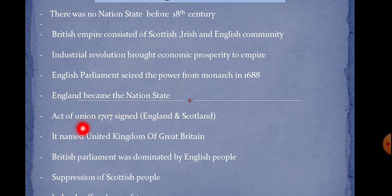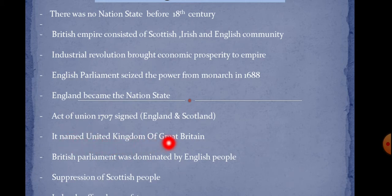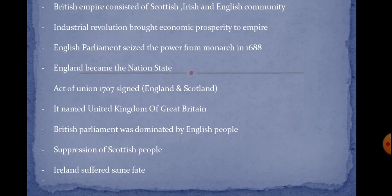After England became a nation state, there was an Act of Union in 1707, signed between England and Scotland. It was named the United Kingdom of Great Britain.